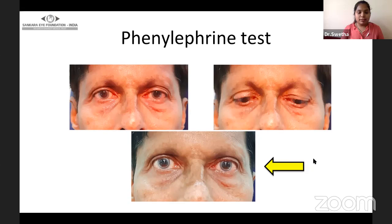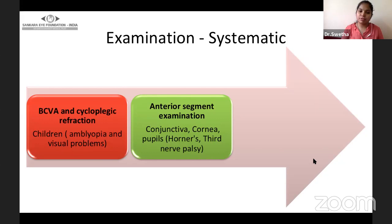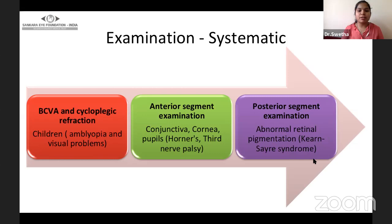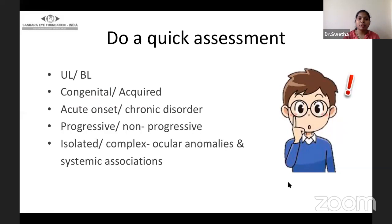The phenylephrine test is performed to see whether Müller's muscle surgery is feasible. Here, left eye mild ptosis is getting automatically corrected after instillation of phenylephrine 2.5%, while the right eye shows lid retraction. The systematic examination should include best corrected visual acuity and cycloplegic refraction, especially in children. The entire anterior segment examination should be comprehensive with special emphasis on the pupils, which are involved in Horner's and third nerve palsy. The posterior segment should rule out any abnormal retinal pigmentation or Kearns-Sayre syndrome. If the patient has systemic features, a systemic or neurological examination is a must.